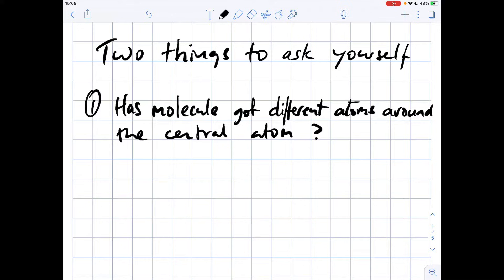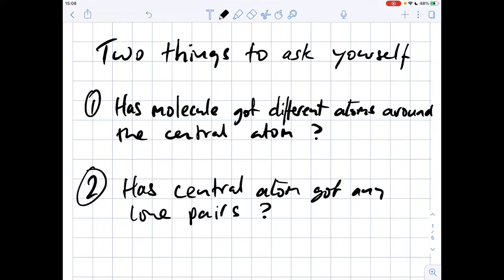The first question is: has the molecule got different atoms around the central atom? Sometimes these are known as terminal atoms. The other thing that you need to ask yourself is: has the central atom got any lone pairs? And if the answer is yes to either of these questions, it's a polar molecule.